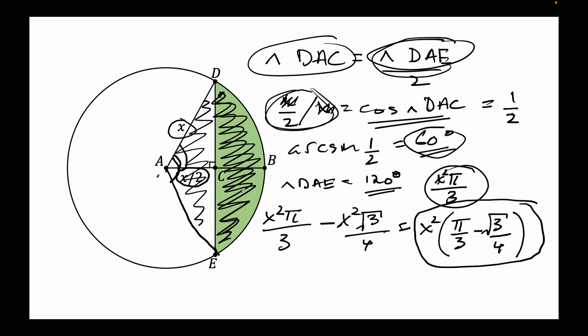But remember that we wanted the full green area, which is also, this is just half of the green area. We also have a part here of the green area, the other overlapping part. So we need to multiply this expression by 2.